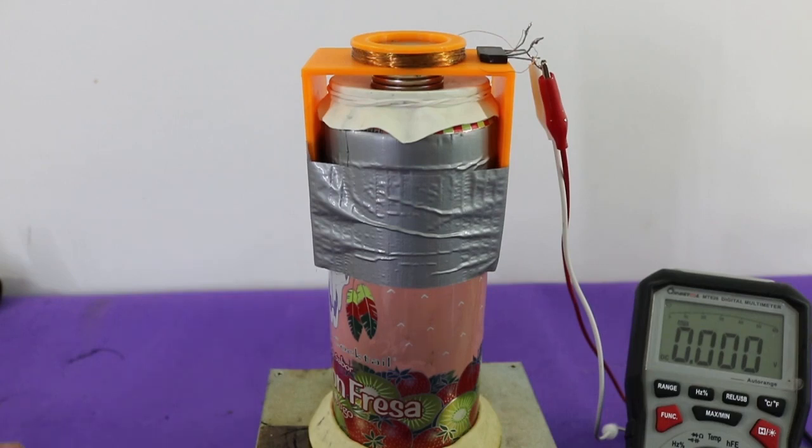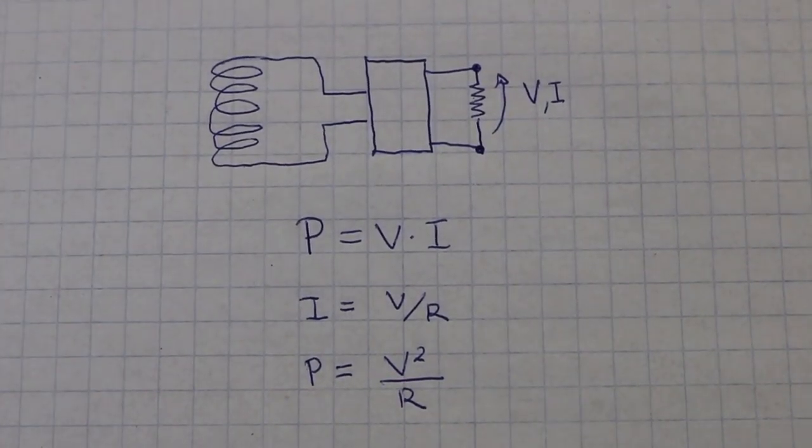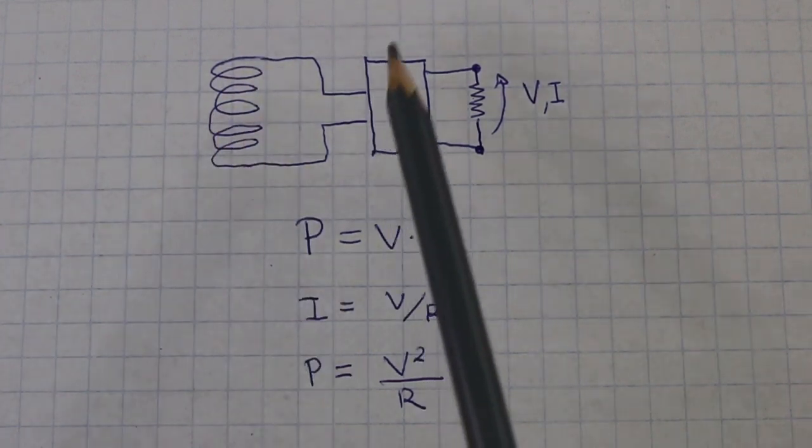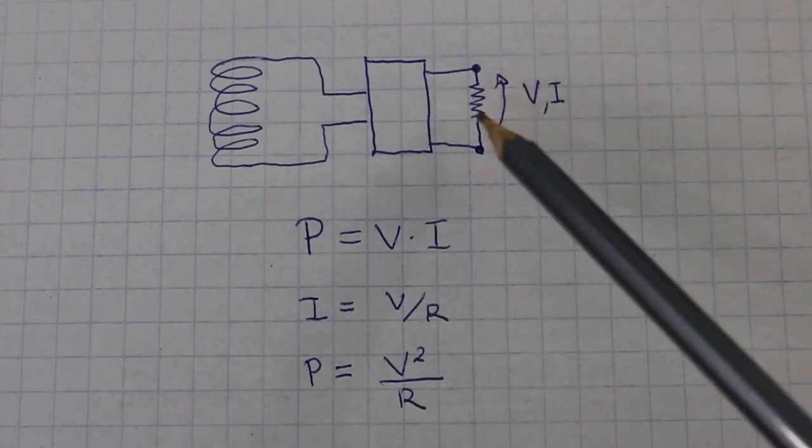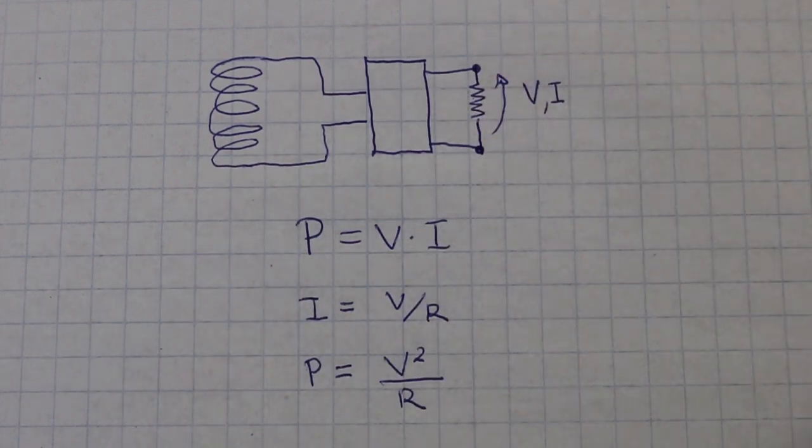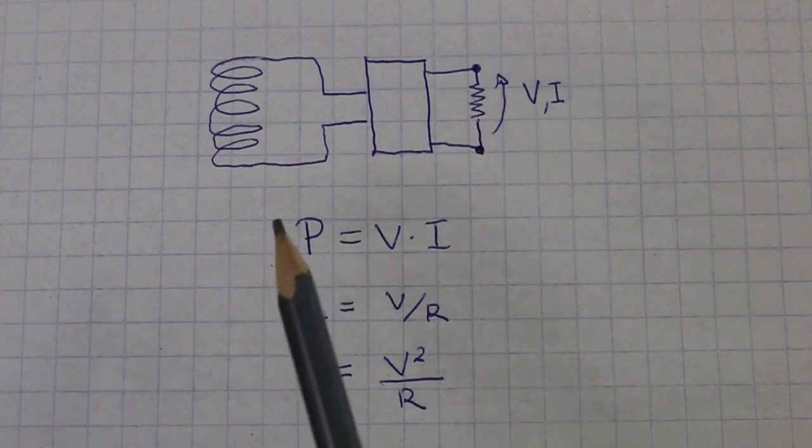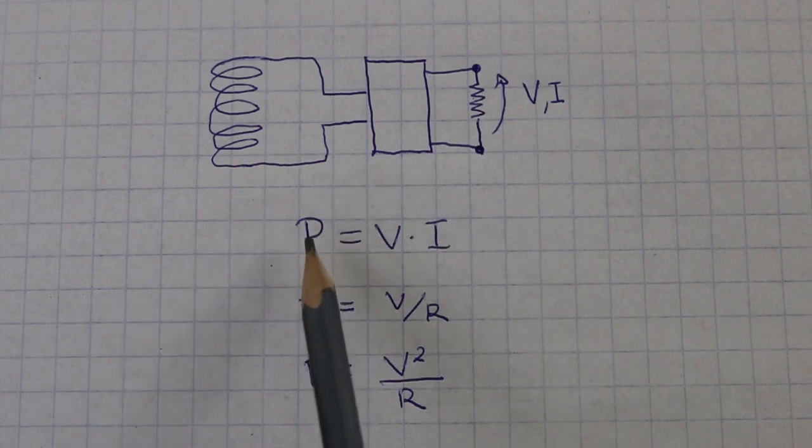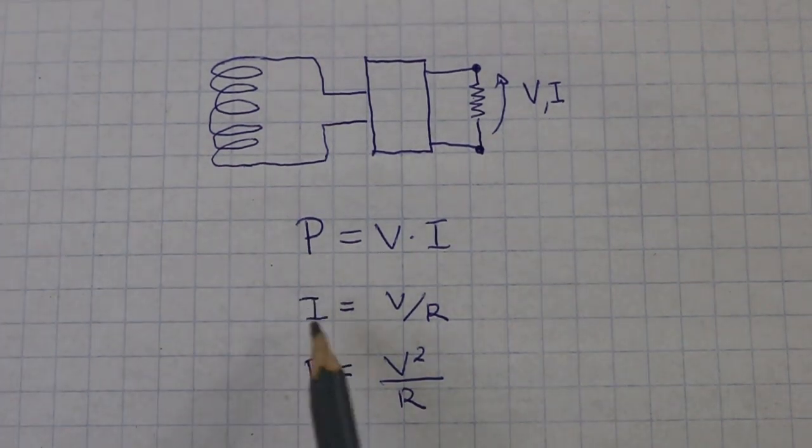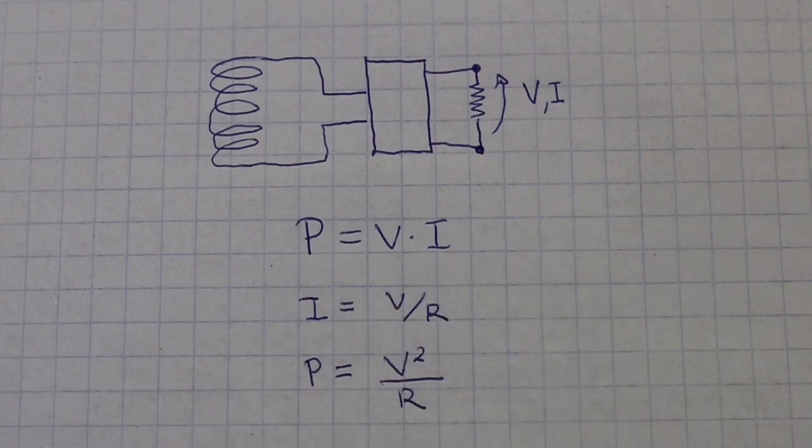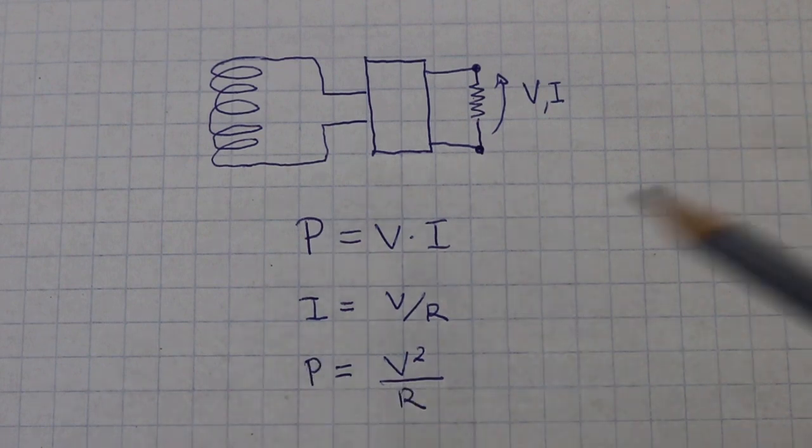because with these two parameters voltage and current we can calculate the power. In order to measure the power we will do the following: here we have the coil, this is the bridge rectifier, and at the output I will put a resistor which is the load on our system. Through the resistor we will have a voltage and a current we can measure separately and then calculate the power as voltage times current. However from Ohm's law we know that the current is equal to the voltage divided by the resistance. If we know the resistance which in my case is 10 ohms we can calculate the power using this formula knowing only the voltage.